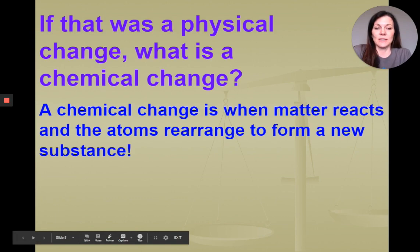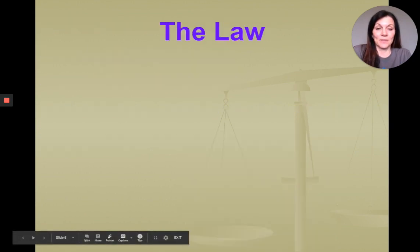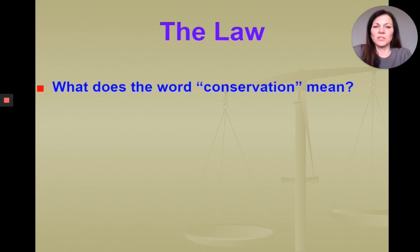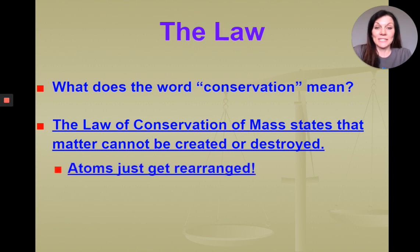A chemical change is when matter reacts and the atoms rearrange to form a new substance. And that new substance is created, and so the law of conservation of mass applies in those situations. What does the word conservation mean? Well, if I'm trying to conserve something, the term conservation might mean to save or to use sparingly. Talking about chemical equations, conservation of mass states that matter cannot be created or destroyed. It just means the atoms get rearranged over and over again.